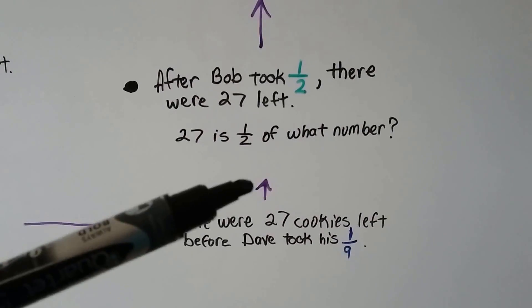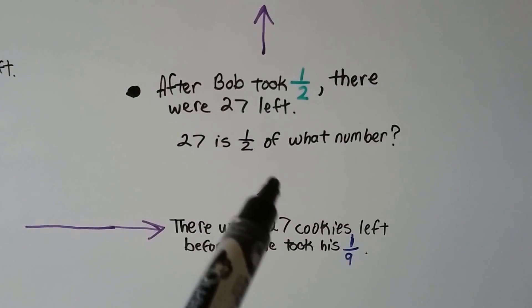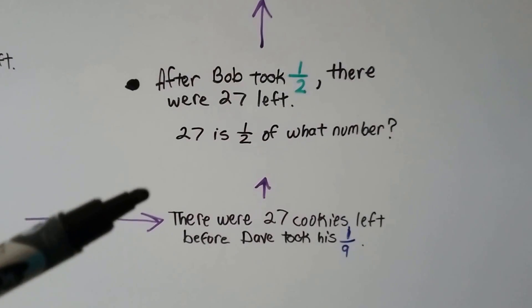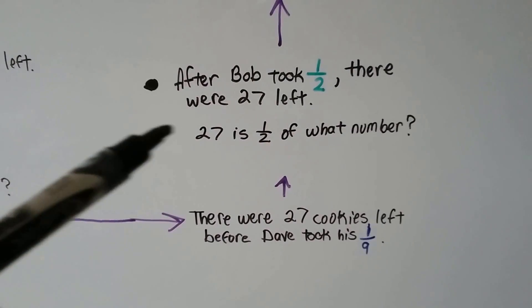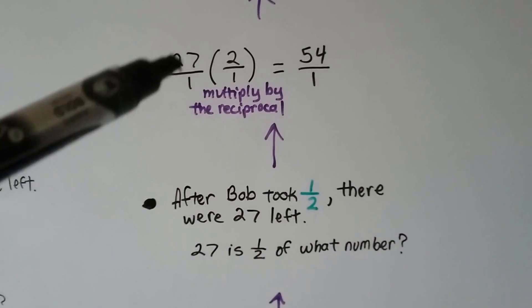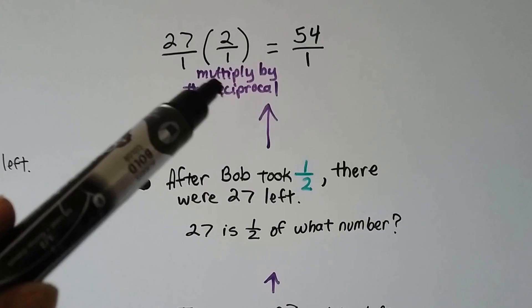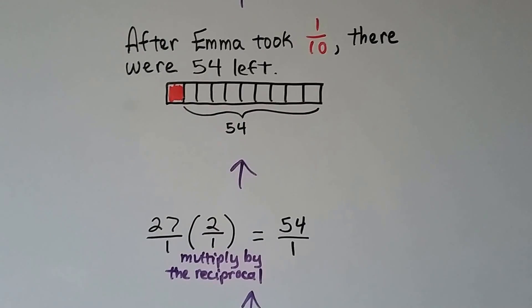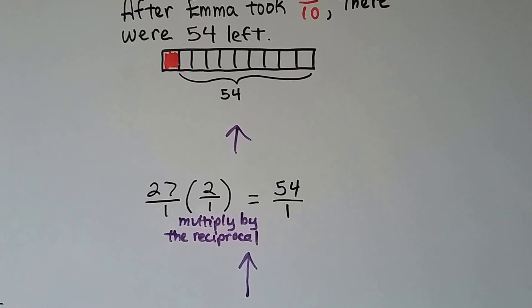Now let's work backwards some more. We know Bob took half. So if there were twenty-seven cookies left after Bob took half, what was there before Bob took the half? Twenty-seven is half of what number? We multiply twenty-seven over one by the reciprocal of a half, that's two over one, and we get fifty-four over one, which simplifies to fifty-four. So after Emma took one-tenth, there were fifty-four cookies.